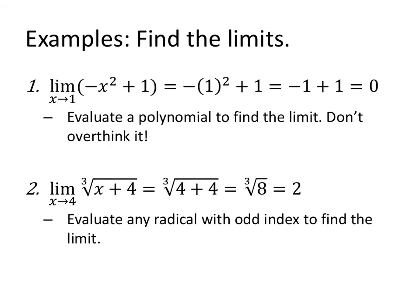So first, the limit of X approaches 1 of negative X squared plus 1. This is a polynomial. In order to find the limit of a polynomial, I evaluate the polynomial at C. That's it. Literally. Do not overthink it. The limit of X approaches 4 of the cube root of X plus 4. I'm going to evaluate. Put the 4 in. 4 plus 4 is 8. The cube root of 8 is 2. I can evaluate it. If you want any radical with an odd index, let it be easy.